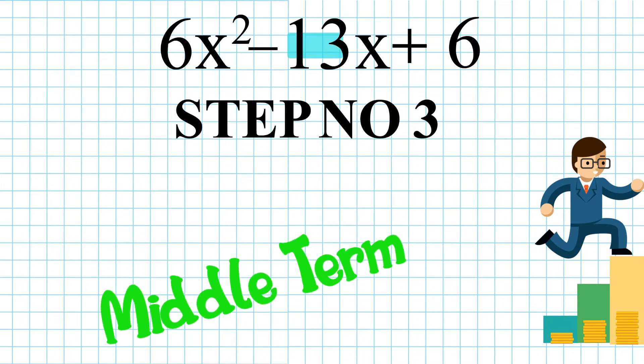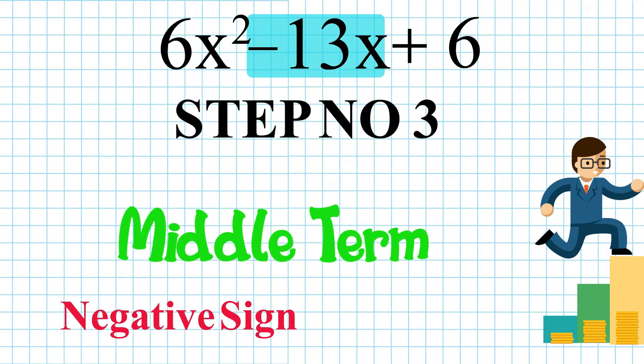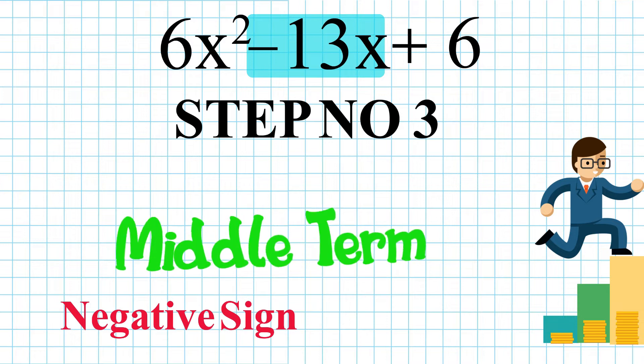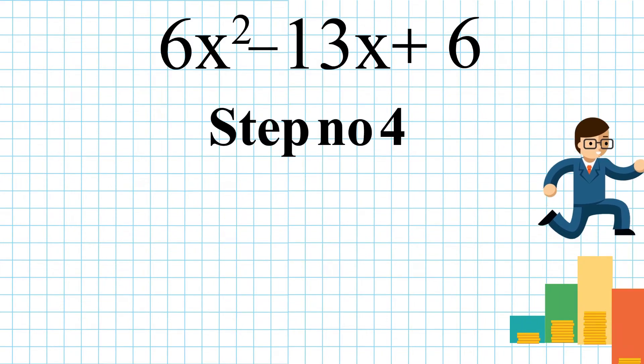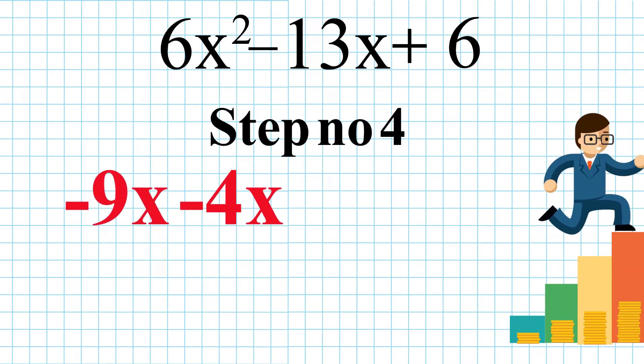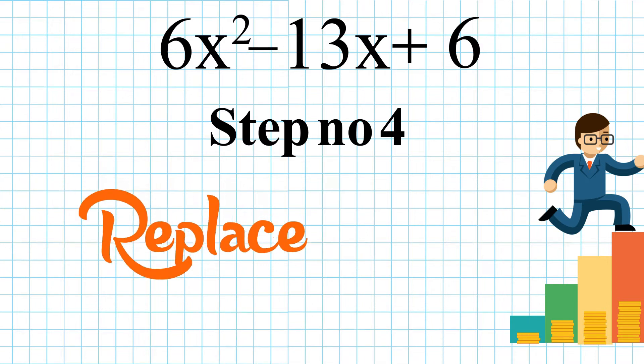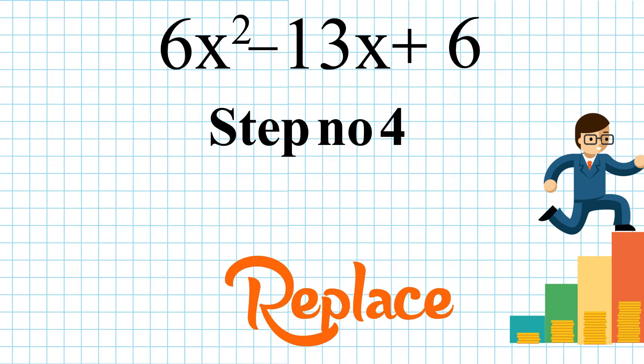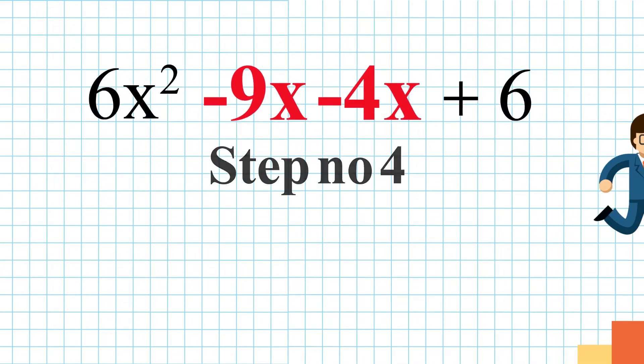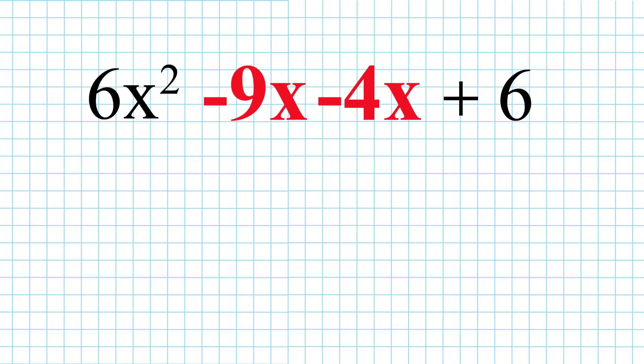But, the middle term in the given expression has a negative sign. So, we need to add both the negative terms as if two terms have a negative sign and are added together, the numbers are added and negative sign is used with the answer. As we have got the factors, let's replace minus 13x by its factors. So, our new term will be 6x square minus 9x minus 4x plus 6.